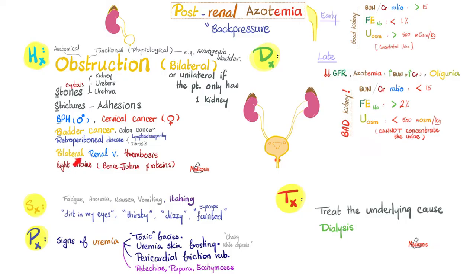Bilateral renal vein thrombosis is another cause of post-renal azotemia because the renal vein is an outflow of the kidney — if obstructed, back pressure will toast the kidney. Multiple myeloma, if severe enough to cause large amounts of Bence-Jones proteins in the urine, can have these light chains obstruct the outflow.